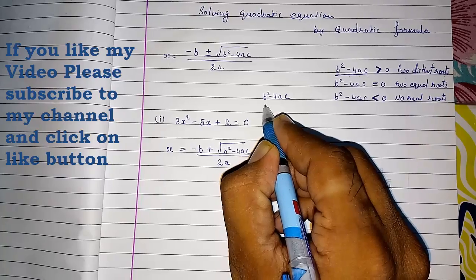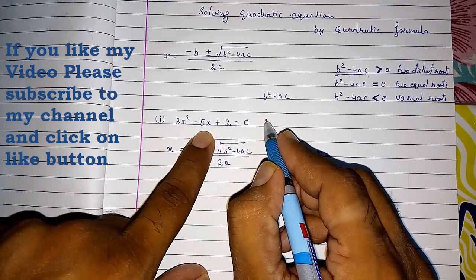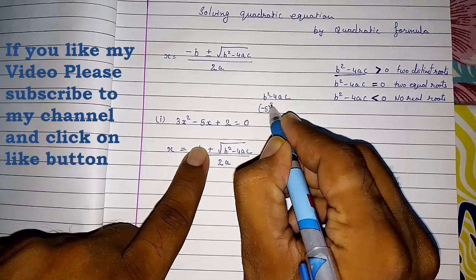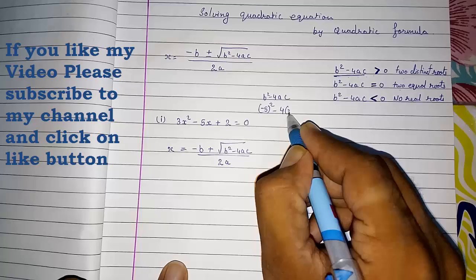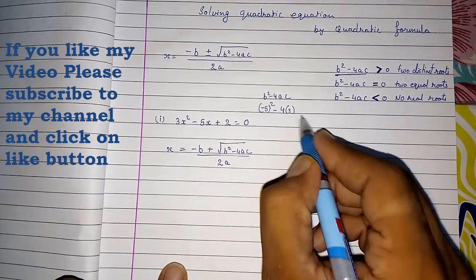So what is b here? It is minus 5 whole square. Then minus 4a that is 3 and c that is 2.